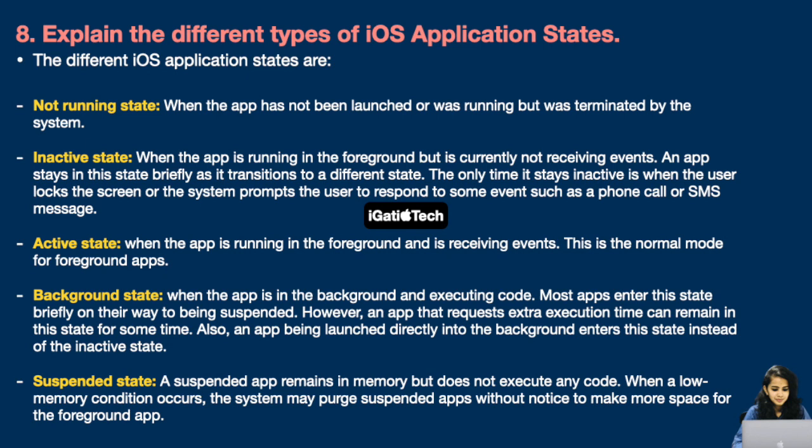Next is background state — when the app is in the background and executing code. Most apps enter this state briefly on their way to being suspended. However, an app that requests extra execution time can remain in this state for some time. An app launched directly into the background enters this state instead of the inactive state. Next is suspended state — a suspended app remains in memory but does not execute any code. When a low memory condition occurs, the system may purge suspended apps without notice to make more space for foreground apps.